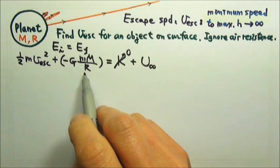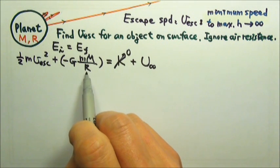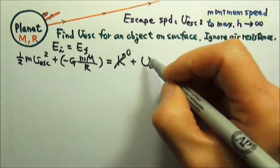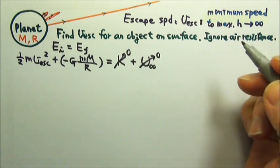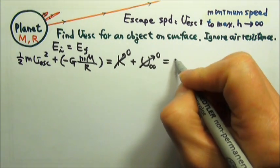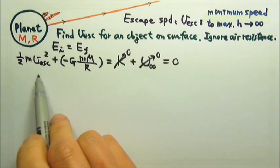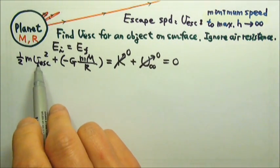If that is the equation we use for gravitational potential energy, when R approaches infinity, the potential energy would be zero. So the total mechanical energy is zero. And then we can solve for the escape speed.